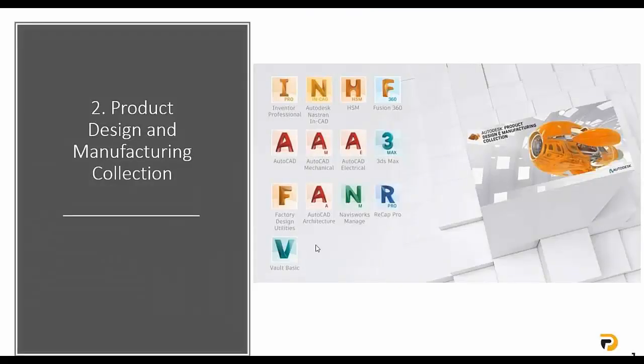Moving on to the next section — the Product Design and Manufacturing Collection. This is the software involved in the bundle. Included in the software, as you can see on the screen, you have Inventor Professional, Nastran, AutoCAD, Navisworks, and Fusion 360. Inventor Professional is the 3D modeling tool with product simulation tools. Included in the PDMC you also have the Nesting Utility and HSM, which provide CAM functionalities.